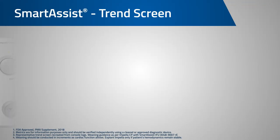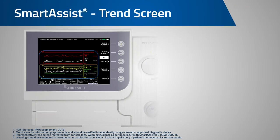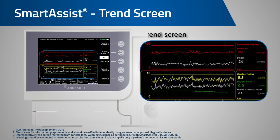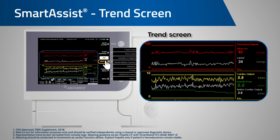These metrics are visualized using the new Trend Screen available with Smart Assist. The Trend Screen provides a reference to the relationship of individual metrics over time. It can be beneficial in helping inform decisions especially during weaning or ramp studies. To access the Trend Screen, you are going to use the soft keys to select display and then the LVEDP cardiac output trend.